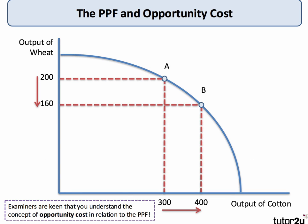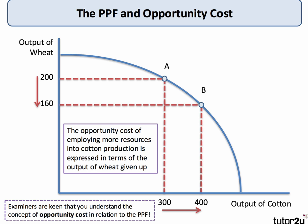Let's look at the PPF and opportunity cost. Examiners are extremely keen that you understand how we can use the PPF to explore opportunity cost. Opportunity cost is the cost of a choice measured in terms of the next best alternative that is given up or sacrificed. In our example, we're increasing the output of cotton by 100 units, moving from point A to point B on the PPF, which involves sacrificing 40 units of wheat.